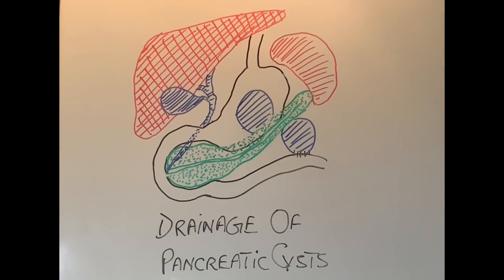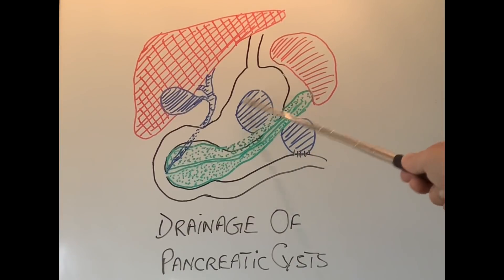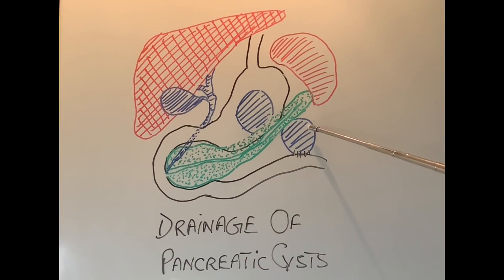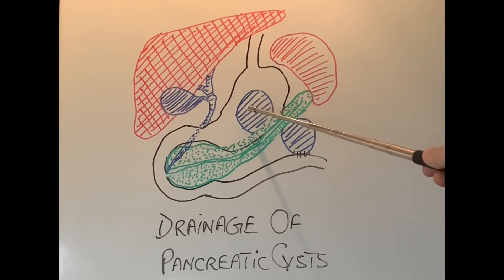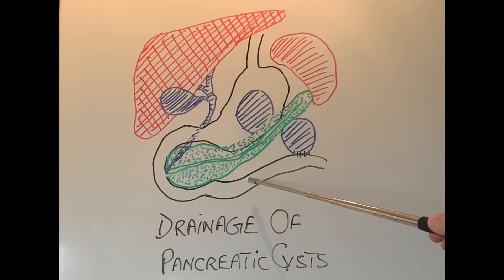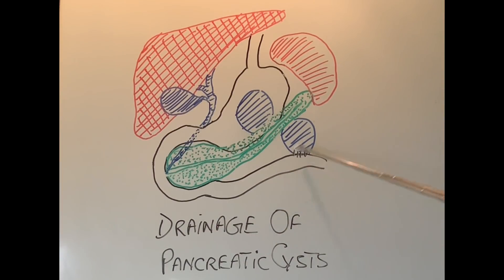Sometimes when the cyst is not lying behind the stomach and can't be drained into the stomach easily — say it's sticking out from the bottom of the pancreas — the surgeon will bring a bit of small intestine and attach it to the cyst so the cyst can drain into the small intestine.